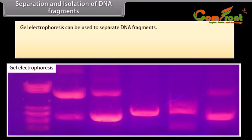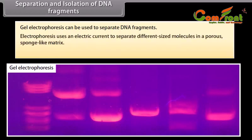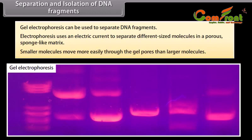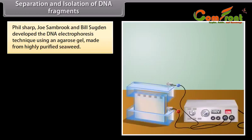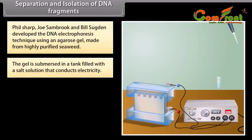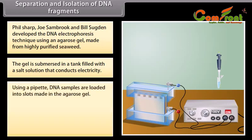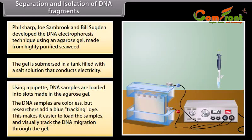Separation and isolation of DNA fragments. Gel electrophoresis can be used to separate DNA fragments. Electrophoresis uses an electric current to separate different sized molecules in a porous, sponge-like matrix. Smaller molecules move more easily through the gel pores than larger molecules. Phil Sharp, Joe Sambro, and Bill Sajan developed the DNA electrophoresis technique using an agarose gel made from highly purified seaweed. The gel is submerged in a tank filled with a salt solution that conducts electricity. Using a pipette, DNA samples are loaded into slots made in the agarose gel, and a blue tracking dye is added.